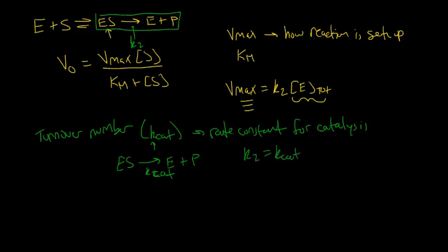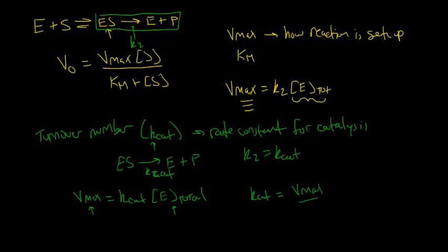Experimentally, K_cat is easy to determine. Using Michaelis-Menten kinetics we can determine V_max, and we know that V_max equals K_cat times the total concentration of enzyme. So we can determine V_max experimentally, and we know the total enzyme concentration because that's how we set up the experiment. Therefore, K_cat can be readily calculated by taking V_max divided by the total concentration of your enzyme.